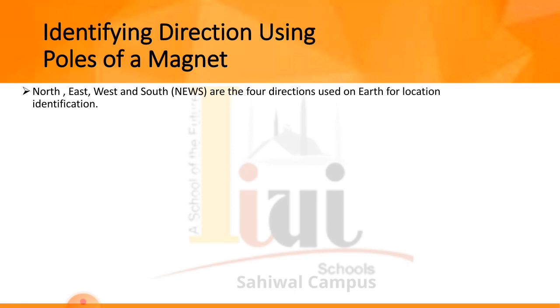North, East, West and South — N, E, W, S — are the four directions used on earth for location identification. These are the four directions used for direction identification.